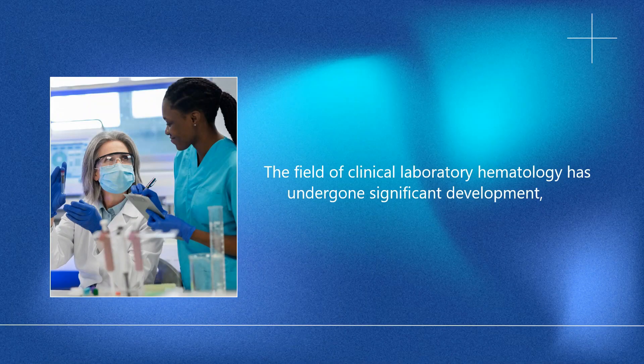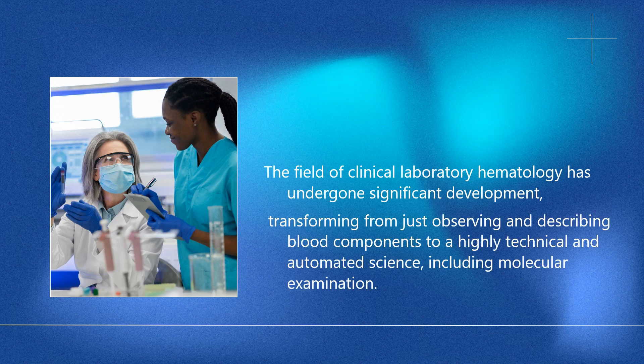The field of clinical laboratory hematology has undergone significant development, transforming from just observing and describing blood components to a highly technical and automated science, including molecular examination. Despite this, some basic tests have remained largely unchanged. This chapter covers these basic tests and explores manual and semi-automated methods as alternatives to automation.